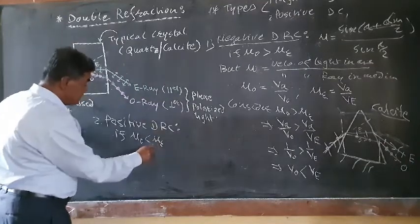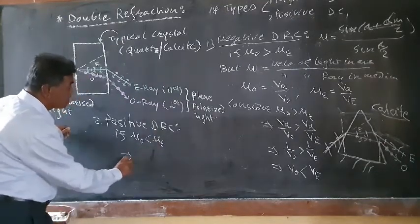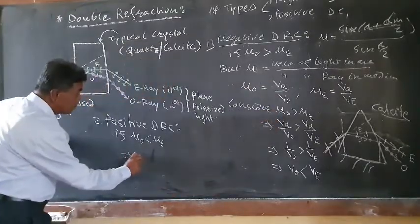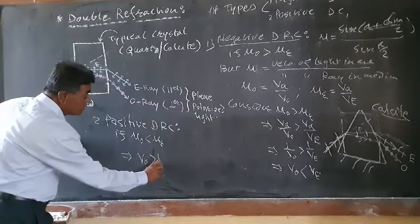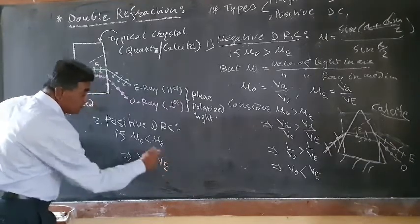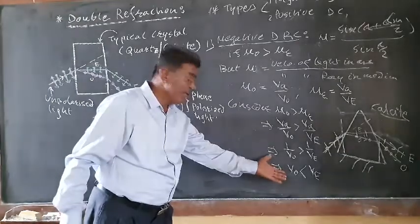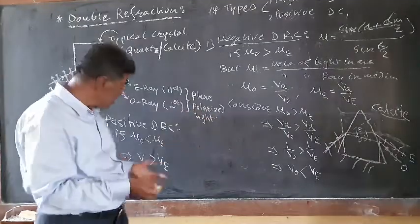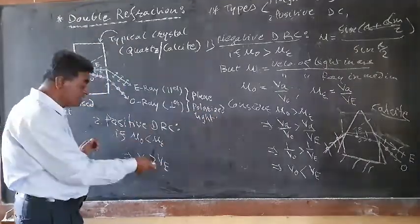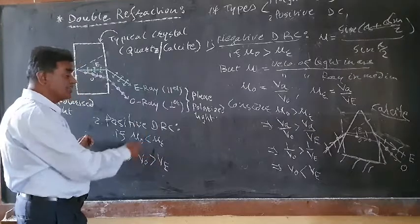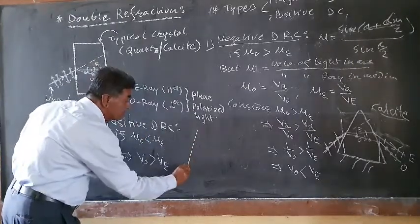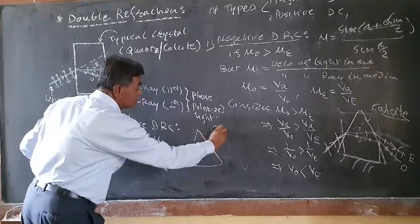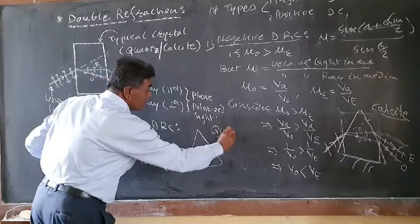For a positive double refracting crystal, since μ_E > μ_O, following the same derivation, we get that the velocity of the O-ray is greater than the velocity of the E-ray — V_O > V_E. This means the O-ray travels faster and the E-ray travels slower in the medium. A good example of a positive double refracting crystal is quartz.